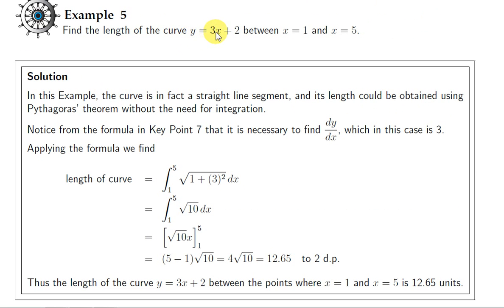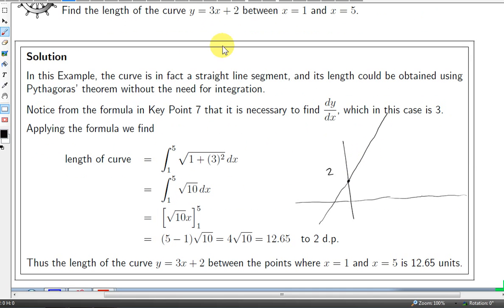Let's take this example: we want the length of the curve y equals 3x plus 2 between x equals 1 and x equals 5. This is the equation of a straight line, so we don't have to use integration, but we will use the integration method anyway. If x equals 0, y equals 2, so the y-intercept is 2 and the slope is 3. So we want the length between x equals 1 and x equals 5.